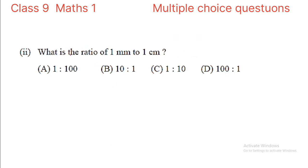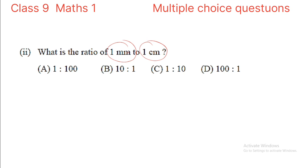Next question: what is the ratio of 1 mm to 1 cm? The options are 1 is to 100, 10 is to 1, 1 is to 10, or 100 is to 1. If we take the ratio of 1 mm to 1 cm, the first term would be 1 mm and the second would be 1 cm.